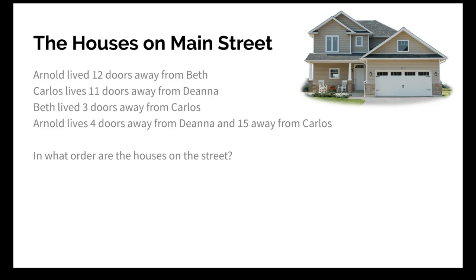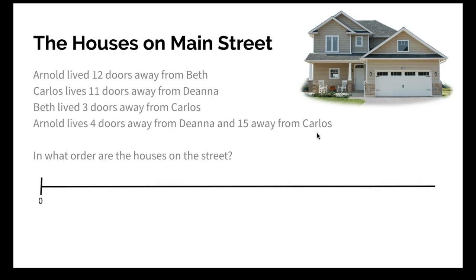When I start questions like this I always want to figure out who lives the farthest away from each other. I have 12 between Arnold and Beth, 11, 3, 4, but I have 15 — 15 between Arnold and Carlos. So I'm going to start a number line from 0 to 15 because that's the biggest number, and I'll put Arnold at 0 and Carlos at 15. I always cross out the information I've used so I don't accidentally come back to it. Arnold lives 12 doors away from Beth, so at position 12 that's Beth's house. It also tells me Arnold lives 4 doors away from Deanna, so I'll put Deanna at position 4.